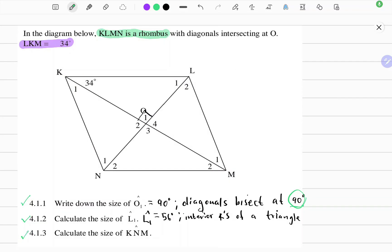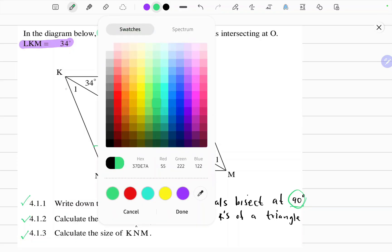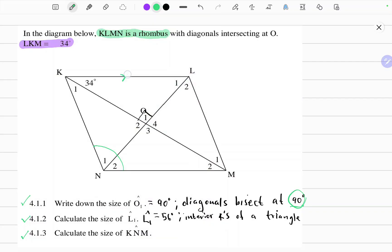And the third question, calculate the size of angle KNM. So let's first identify angle KNM, we're talking about this angle here. Recall that opposite sides of a rhombus are parallel. Now we can identify our Z shape and we know that alternating angles exist between parallel lines and form a Z shape. So that would mean angle M2, this angle here is 34 degrees.